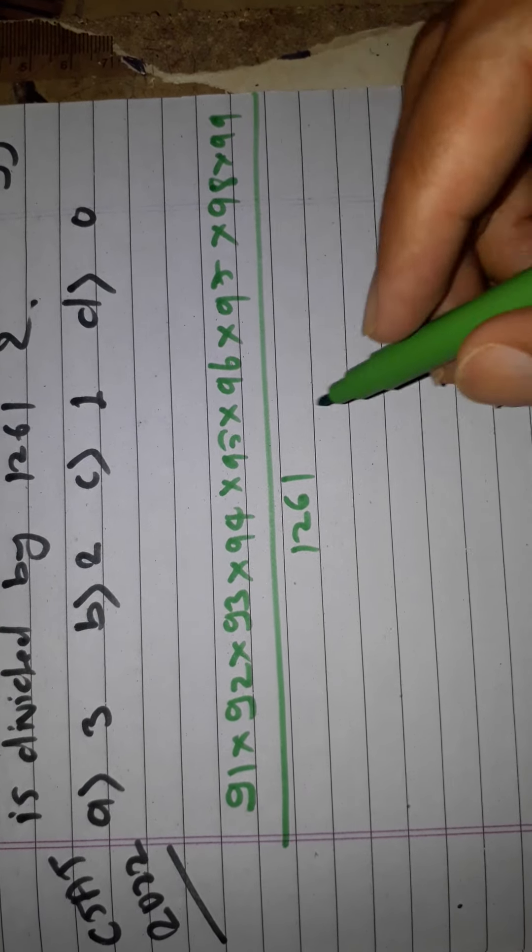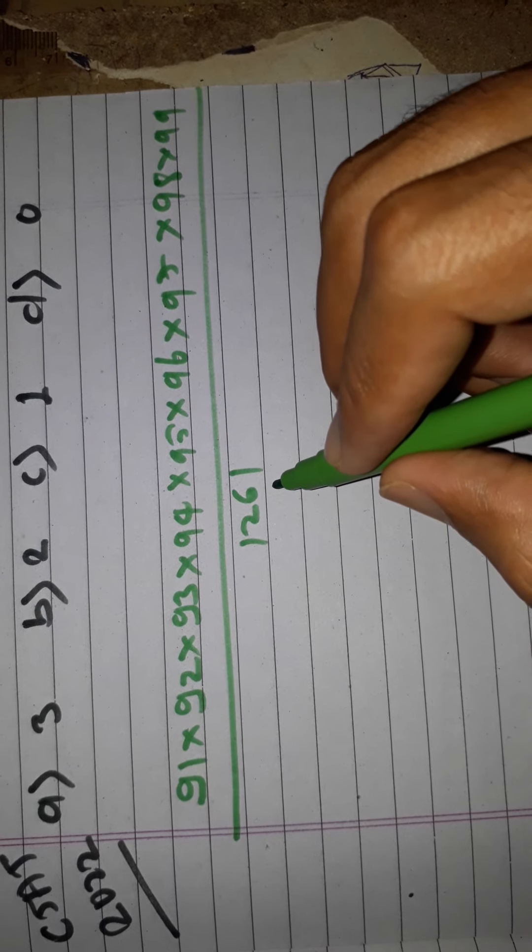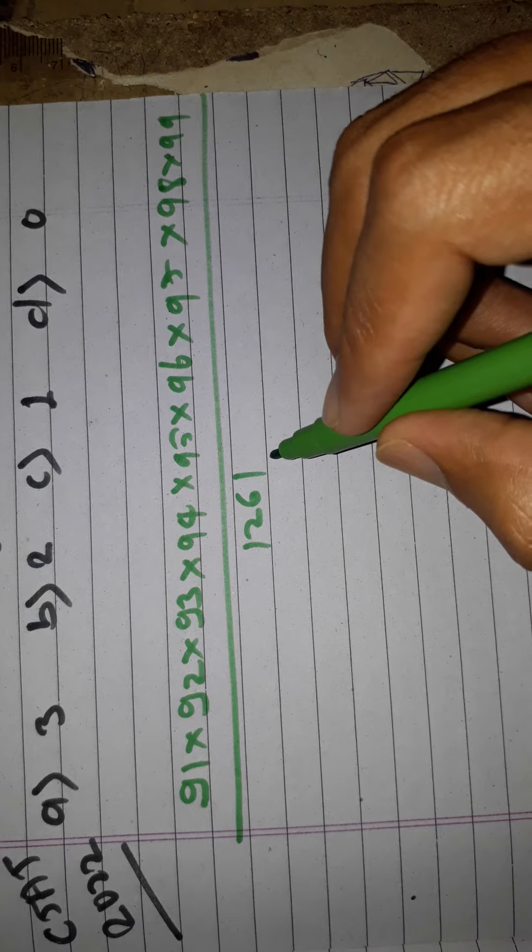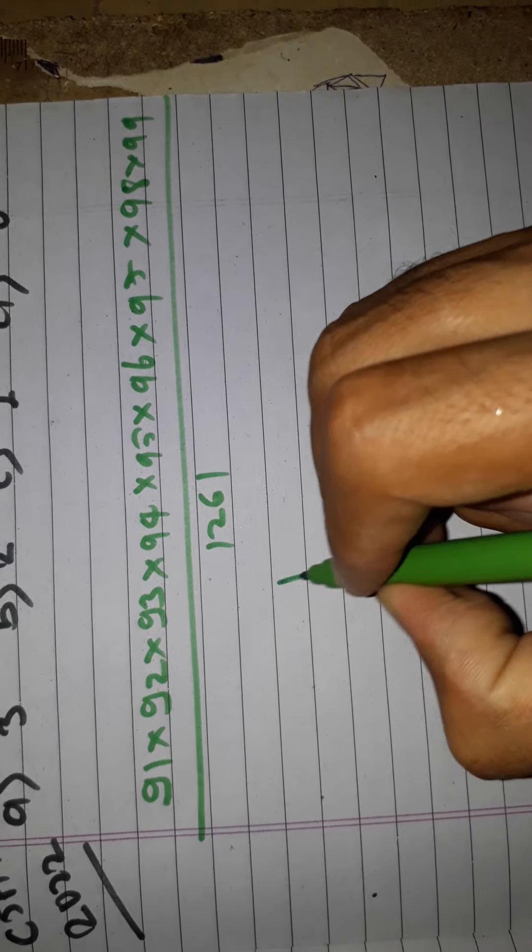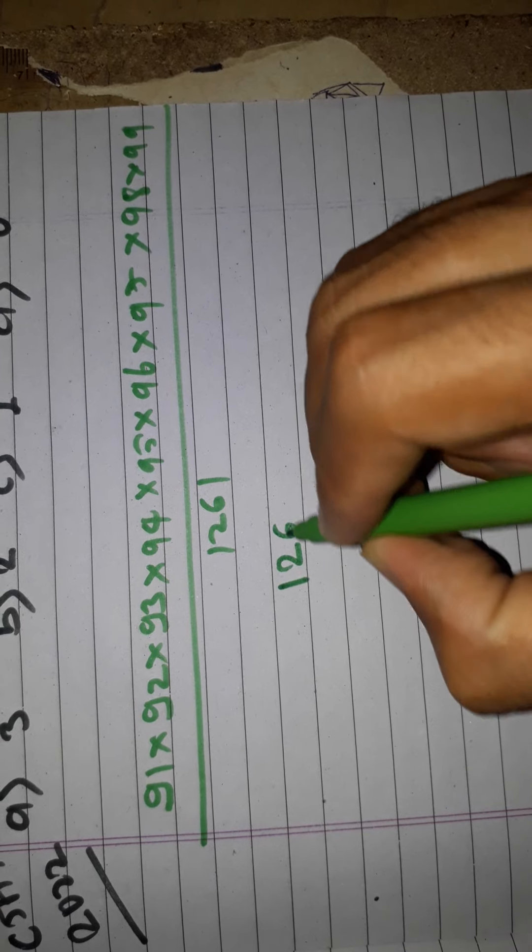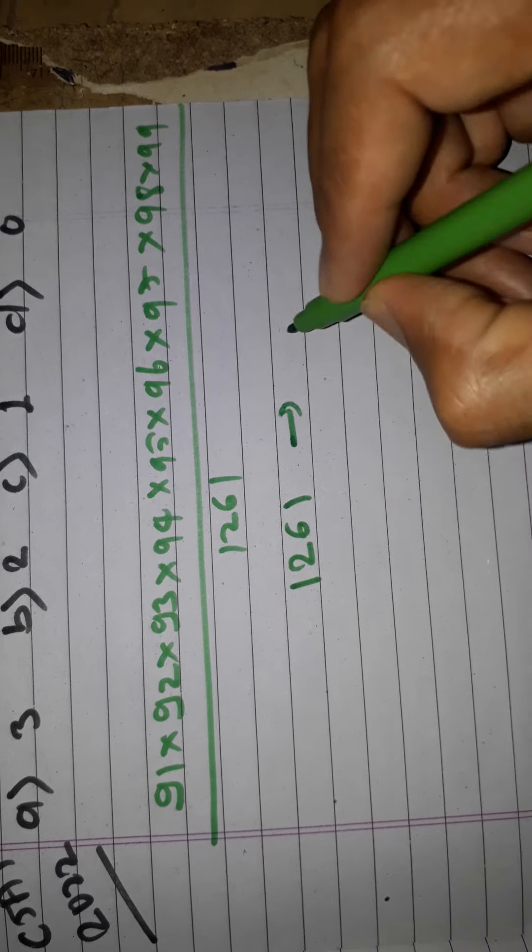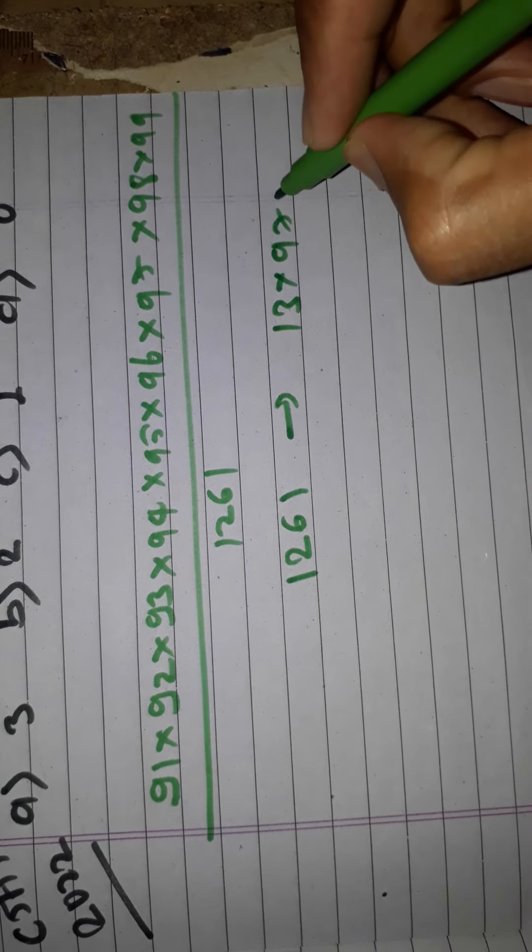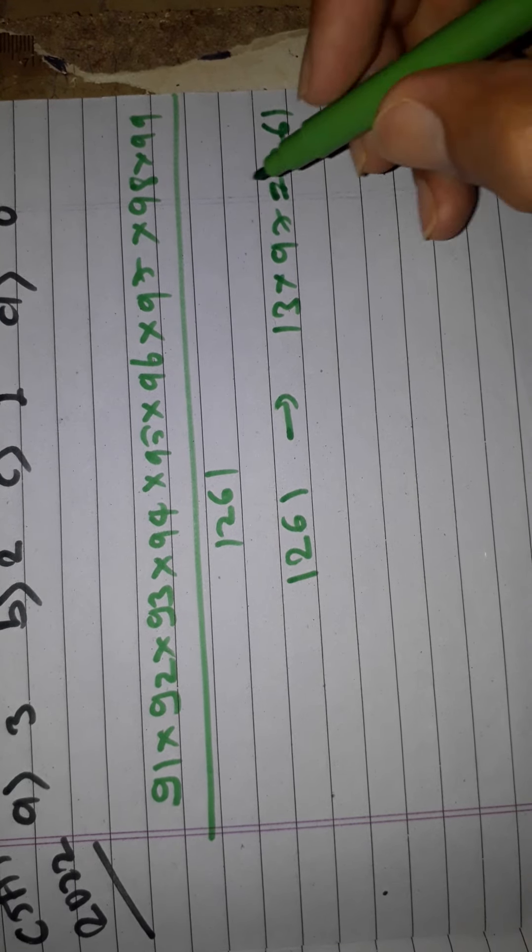But whenever we have this division 1261, how can we write it in minimum numbers? We can write 1261 as 13 × 97. We can also write 1261 this way.